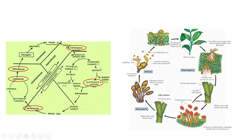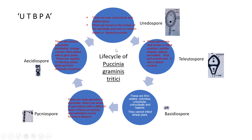The complete cycle on the wheat plant and the barberry plant is shown with clear pictures, including a colorful pictorial representation showing where meiosis takes place across seasons. To make this life cycle easy to remember, a mnemonic is provided: UTBPA — standing for Uredospore, Teliospore, Basidiospore, Pycnidiospore, and Aecidiospore — the series of spores in order.